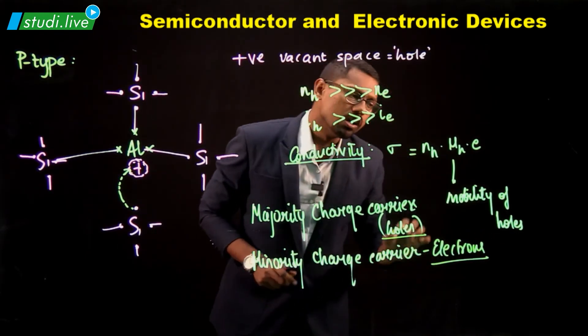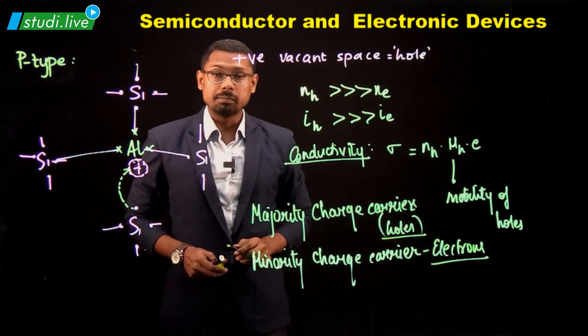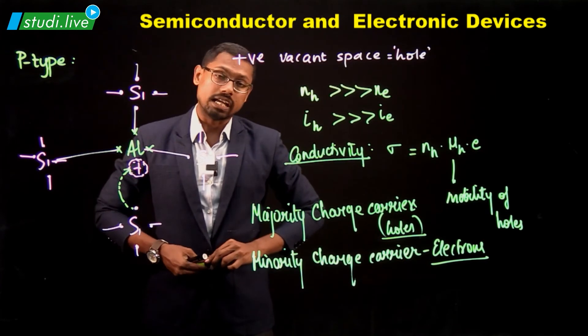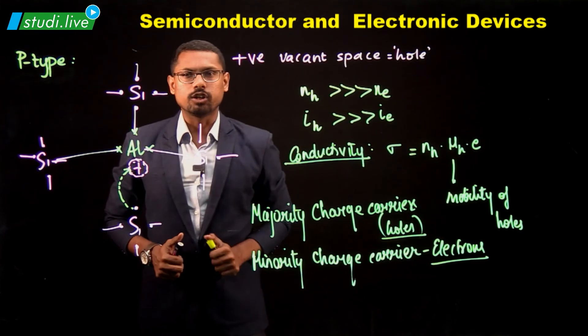So I suppose everybody has understood a lot about this topic. We now know what a P-type semiconductor is, what an N-type semiconductor is, what an extrinsic semiconductor is. In the next video, we are going to learn about the valence band and the conduction band.